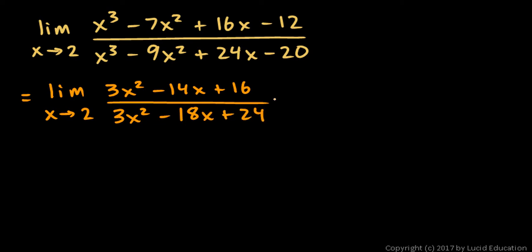And then let's see if we can evaluate this at X equals 2. So at X equals 2, up top we'll have 3 times 4, that's 12 minus 28 plus 16 gives us 0, and we get 0 in the denominator as well. So we can apply L'Hopital's rule again.